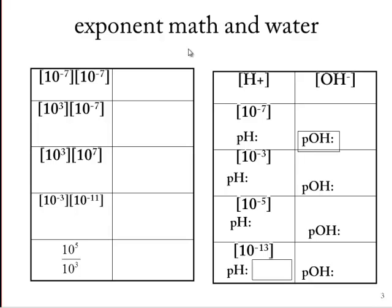10 to the minus 7th times 10 to the minus 7th is 10 to the minus 14th. If you didn't know that, check it out. You just add them up. How do you multiply exponents? Add them. 10 to the minus 4th, 10 to the 10th, 10 to the minus 14th. For adding them when we multiply exponents, this must be subtracting them when we divide. And we are. 10 to the 5th over 10 to the 3rd is 100, 10 squared.